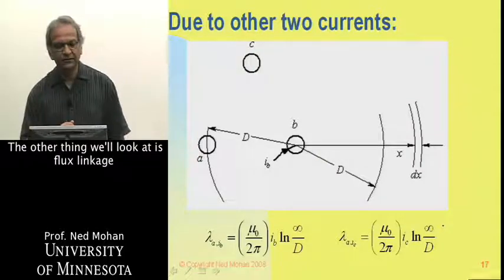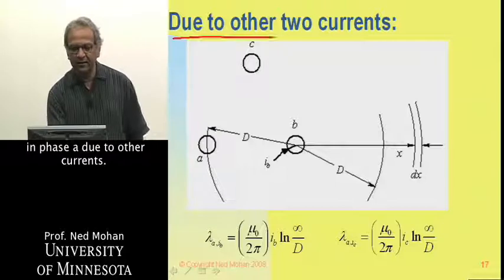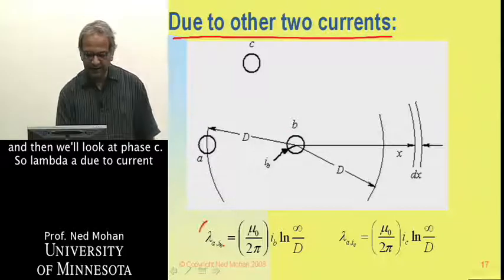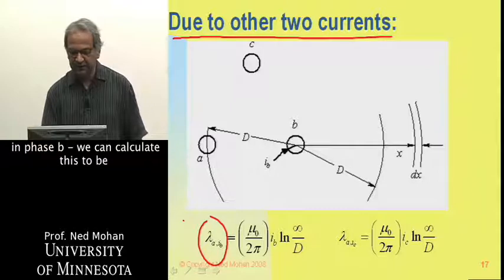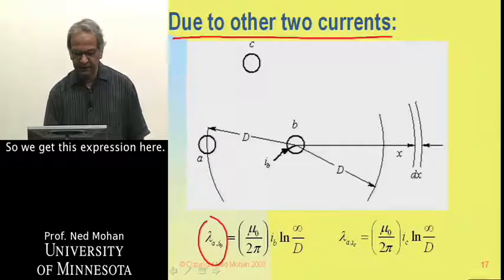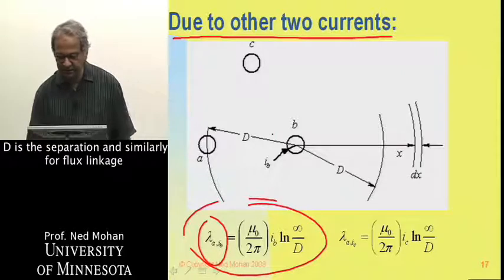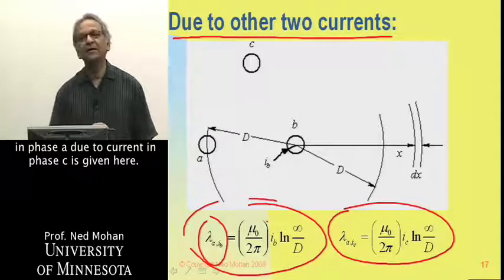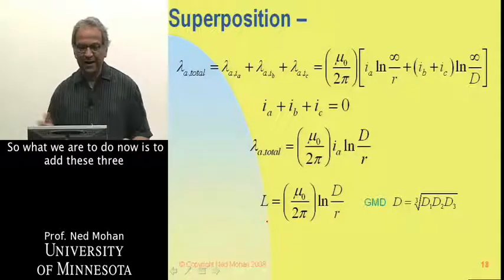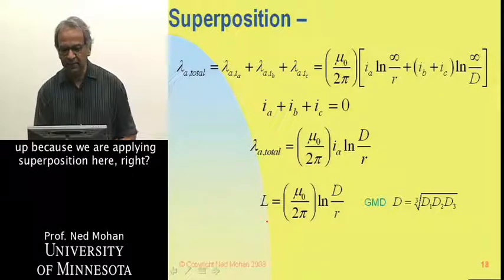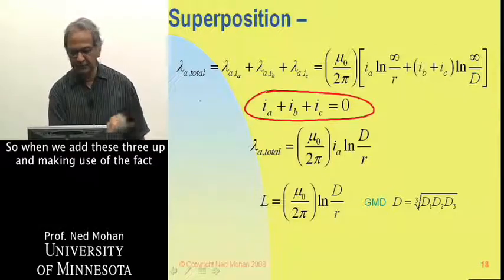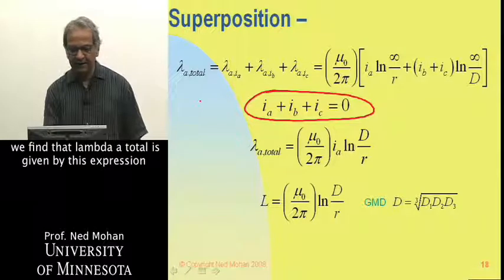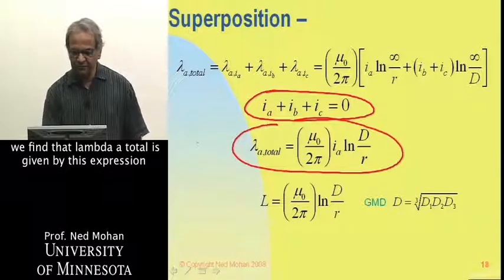The other thing we will look at is flux linkage in phase a due to other currents. If you look at the current in phase b first, and then we look at phase c, lambda a due to current in phase b, we can calculate this to be between d and infinity here. So we get this expression here, d is the separation. Similarly for flux linkage in phase a due to current in phase c is given here. So what we have to do now is to add these three up because we are applying superposition. When we add these three up and making use of the fact that these three currents add up to zero under balanced conditions,